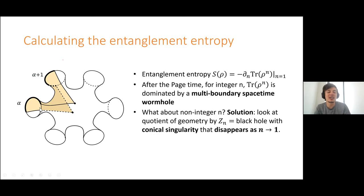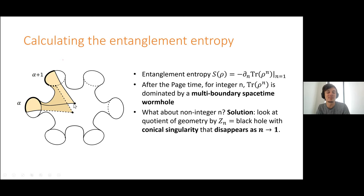For n greater than 1 we have n different copies of a black hole. It turns out after the page time, the dominant configuration is to have them all connected together by some big multi-boundary spacetime wormhole. But that's just integer n, and we can't take a derivative of integers. There's a very clever trick: this multi-boundary crazy spacetime wormhole has a symmetry where you cycle through the black holes. We look at the quotient of the whole geometry by that symmetry — just one wedge, gluing corresponding lines together. Now we just have one boundary rather than n. The only weird thing is there's a conical singularity at the center — like the tip of a cone — and you can dial the sharpness of the cone to arbitrary non-integer values of n.